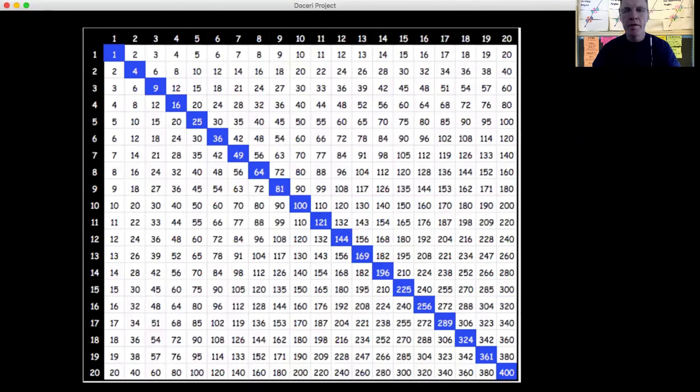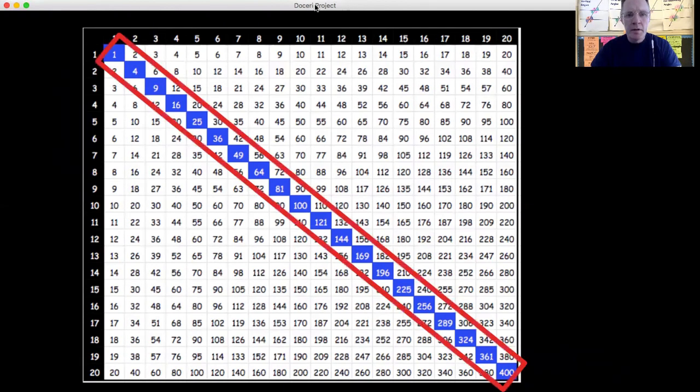When we're simplifying radicals, one thing you should definitely think about is your multiplication table. In particular, this diagonal here—these are square numbers that will really help us when simplifying radicals. This is something you should definitely memorize. If you don't have one, I will save one in our shared Google Classroom. Know that diagonal.